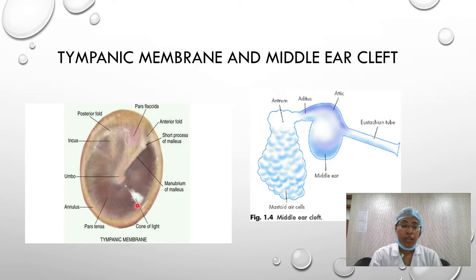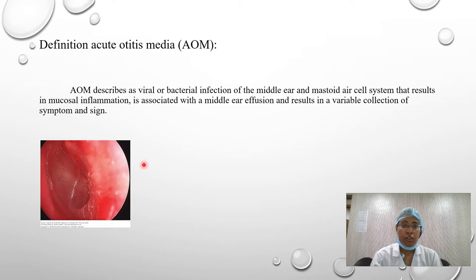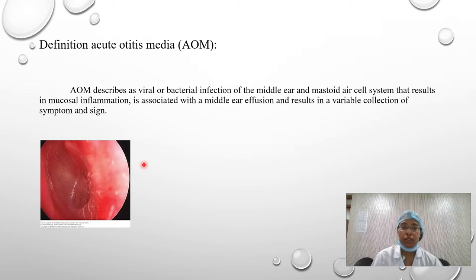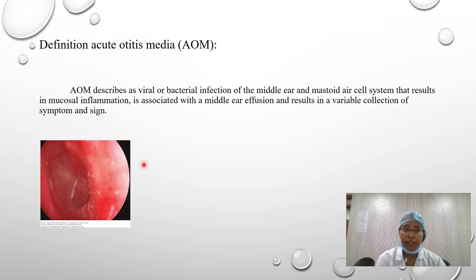The tip of the handle of malleus is called the umbo, with the cone of light in the antero-inferior quadrant. Acute otitis media is generally a condition more commonly seen in children, though it can also be seen in adults. It is an acute viral or bacterial infection of the middle ear and the mastoid air cell system that results in mucosal inflammation and middle ear effusion.